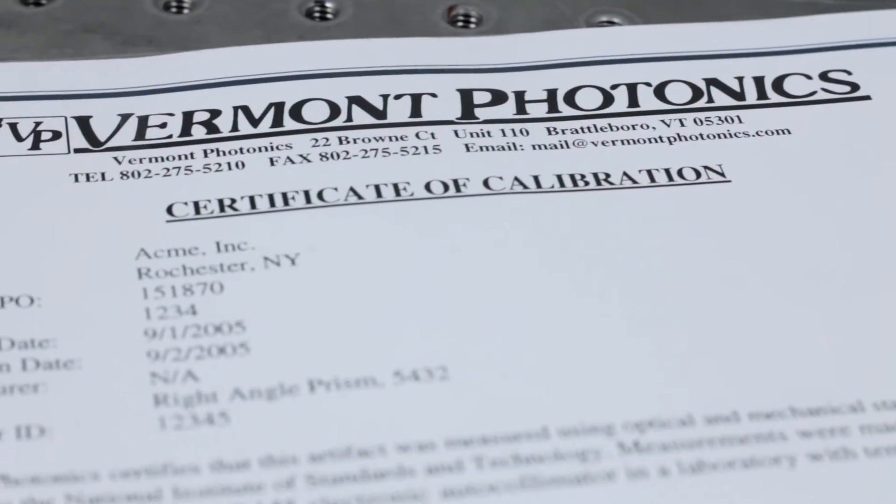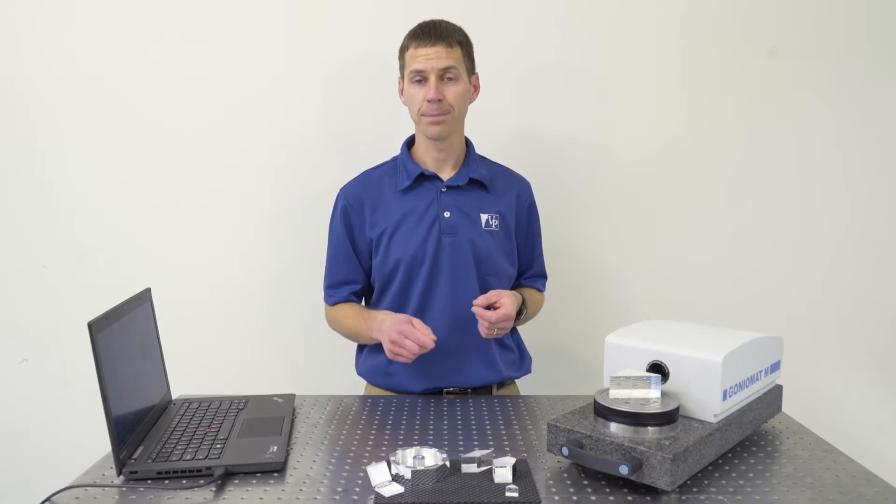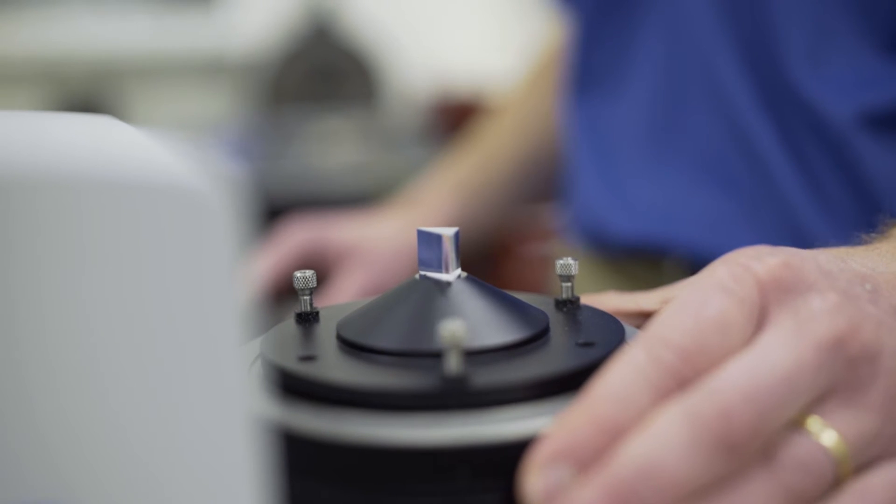You can also send your parts here to Vermont Photonics, and we'll measure it here on our GoniMAT-M. We'll produce the NIST traceable certificate, and then you can use the part as a golden artifact in your shop. You can also send Vermont Photonics a sample part. If you're not sure if your part can be measured on the GoniMAT, we'll give it a try, and we'll call you back and let you know how it went, maybe even give you some measurements.